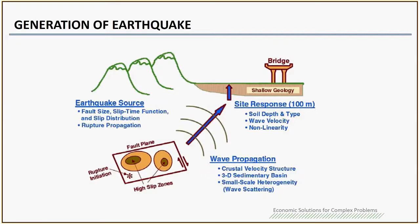This slide provides how an earthquake is generated. Basically it needs three parts: the first is earthquake source, then you have the wave propagation, and finally the site response near the ground surface.